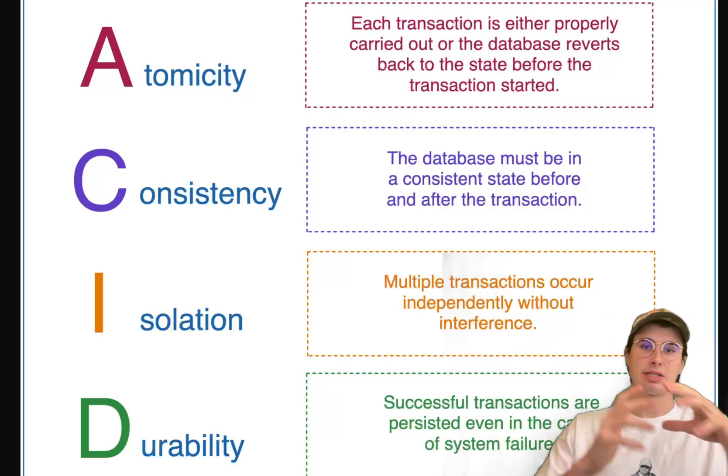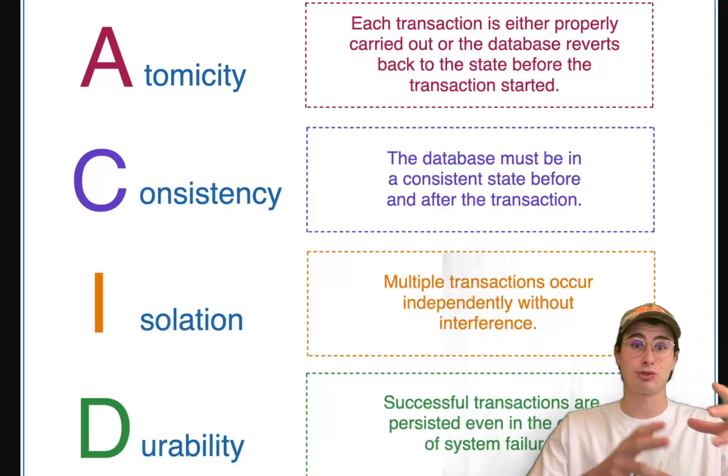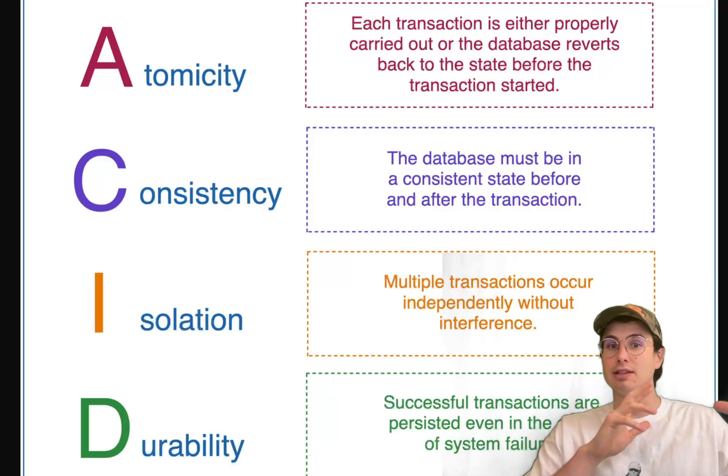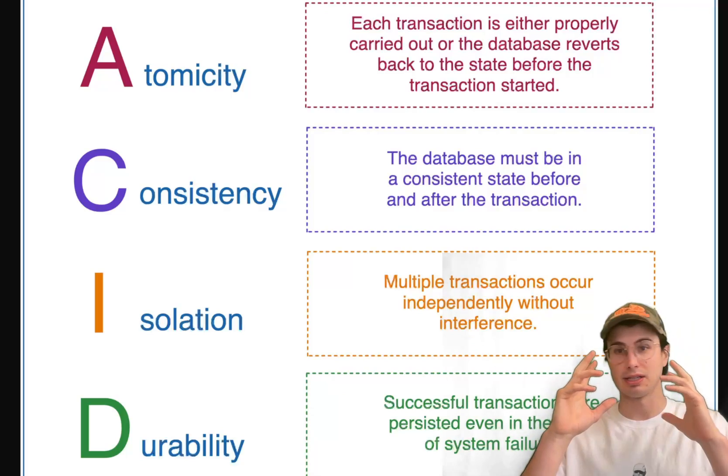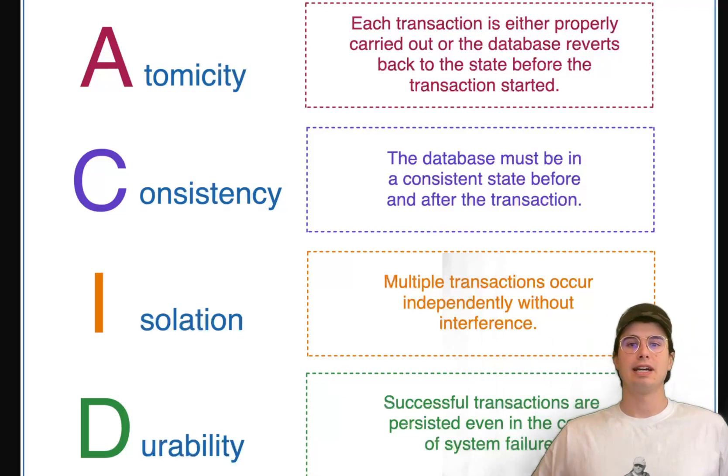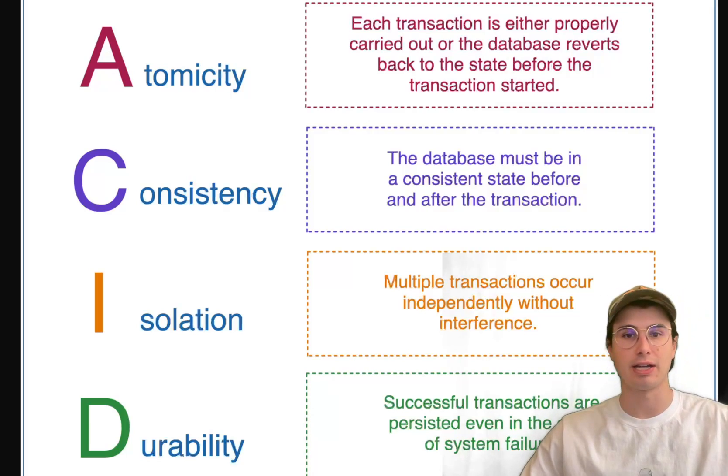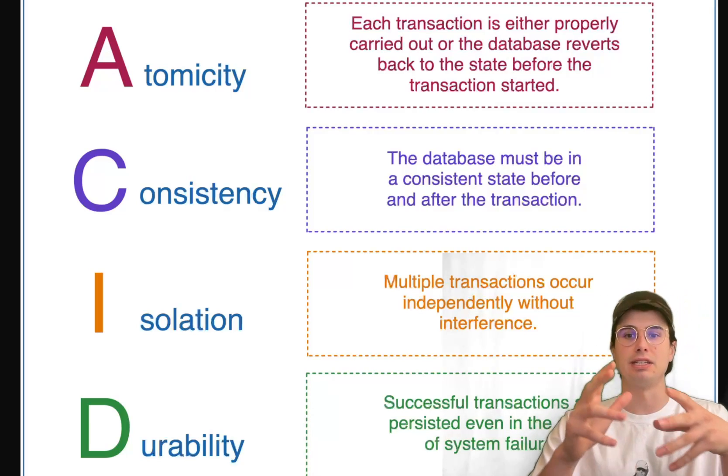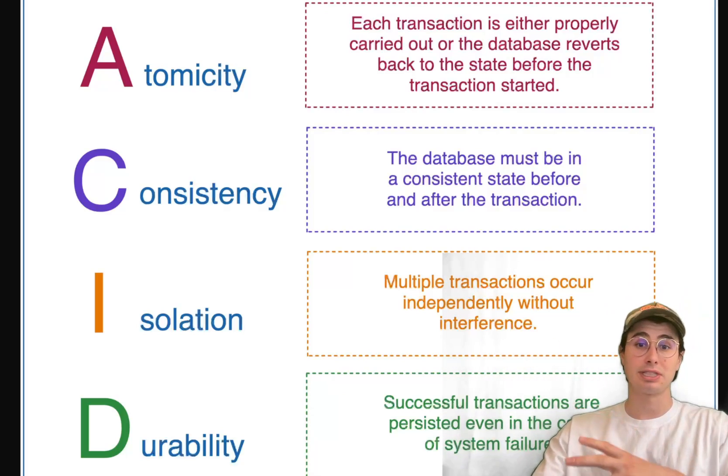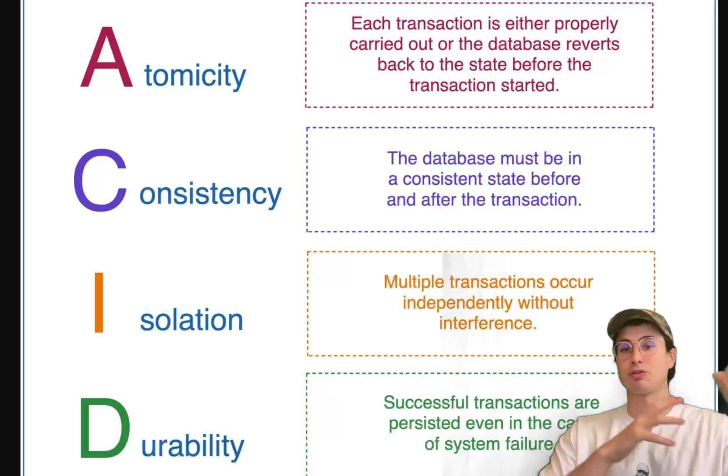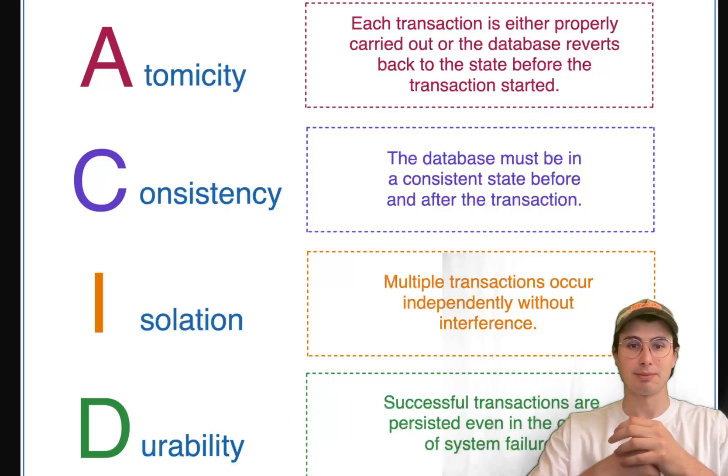Consistency is guaranteeing that the transaction can only bring a database from one valid state to another. There cannot be any kind of inconsistent state where there's a fragment of data and that any data that's written in the database must pass all your defined rules, constraints, cascades, and triggers to actually be ingested into the database. So you're not validating the data once it comes into your database, you're validating it before it even is entered into your database.